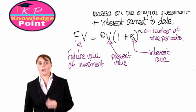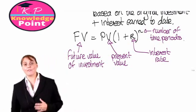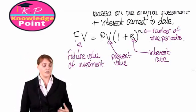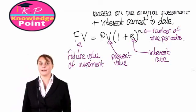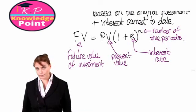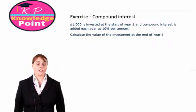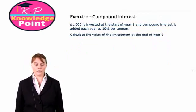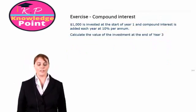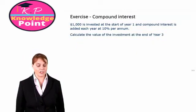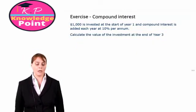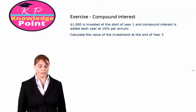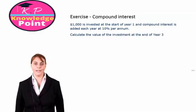We know what compound interest is and we have our formula, so we're going to look at an exercise to see how the compound interest calculations work. We are told a thousand dollars is invested at the start of year one, compound interest is added each year at ten percent per annum, and we need to calculate the value of the investment at the end of year three.